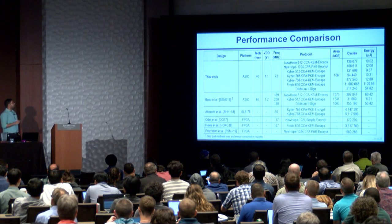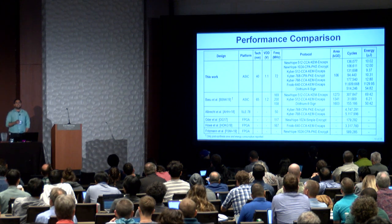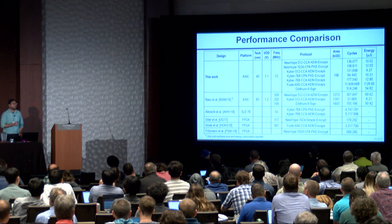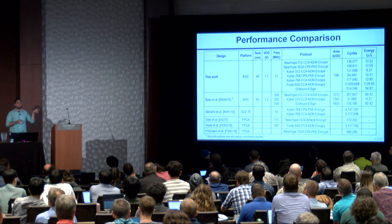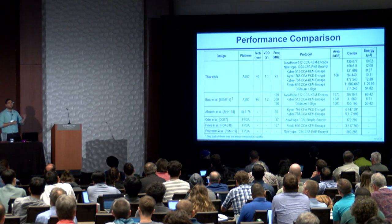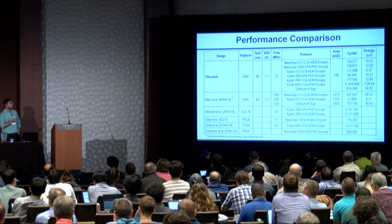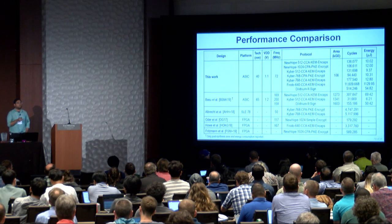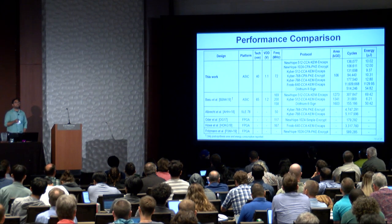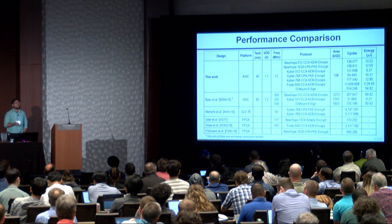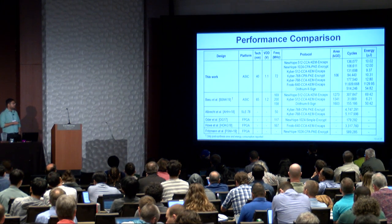In this table, we compare our work with some previous hardware-accelerated implementations of lattice-based NIST candidates, with a more detailed sub-module comparison available in the paper. The three key ideas are: configurable parameters, single-port RAM NTT which provides area efficiency, and the fast SHA-3-based PRNG which makes our sampling energy efficient.